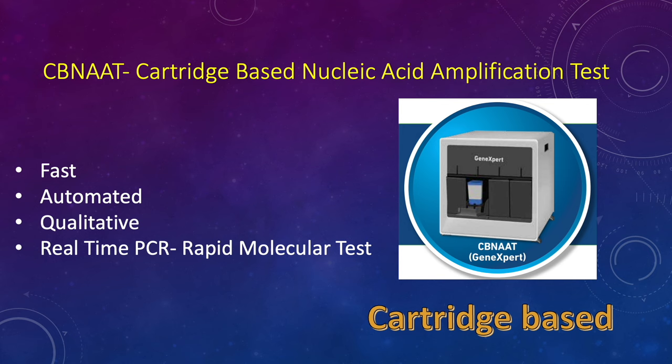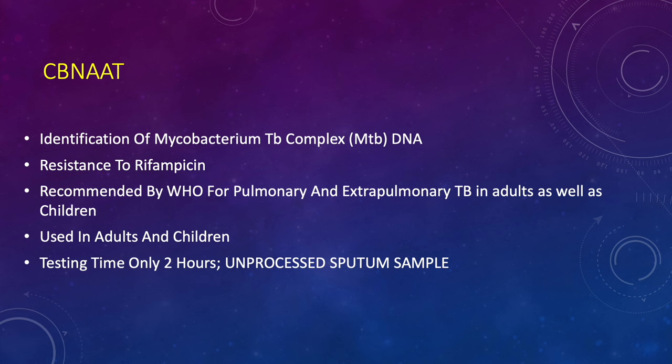The primary purpose of CBNAAT is: one, to detect whether it's MTB; two, to detect whether there's rifampicin resistance. It must be made very clear that GeneXpert or CBNAAT does not detect isoniazid resistance — it only reports rifampicin resistance. It is recommended by the WHO and by the National TB Elimination Programme, and it is routinely done for both adults and children. It's a very quick test, and with a direct sputum specimen, the machine gives results in about 1 hour 45 minutes.